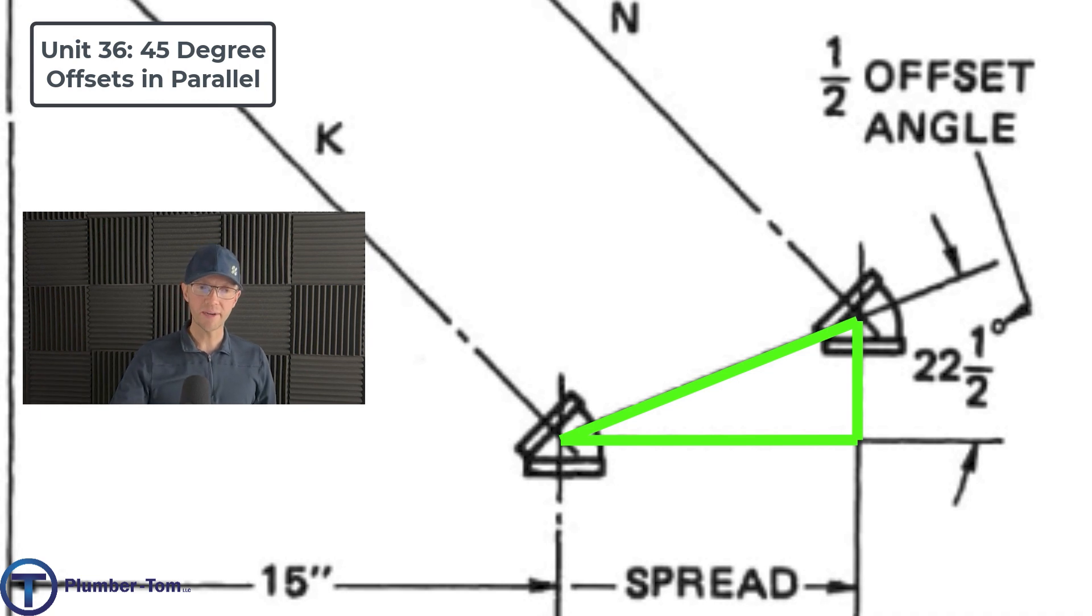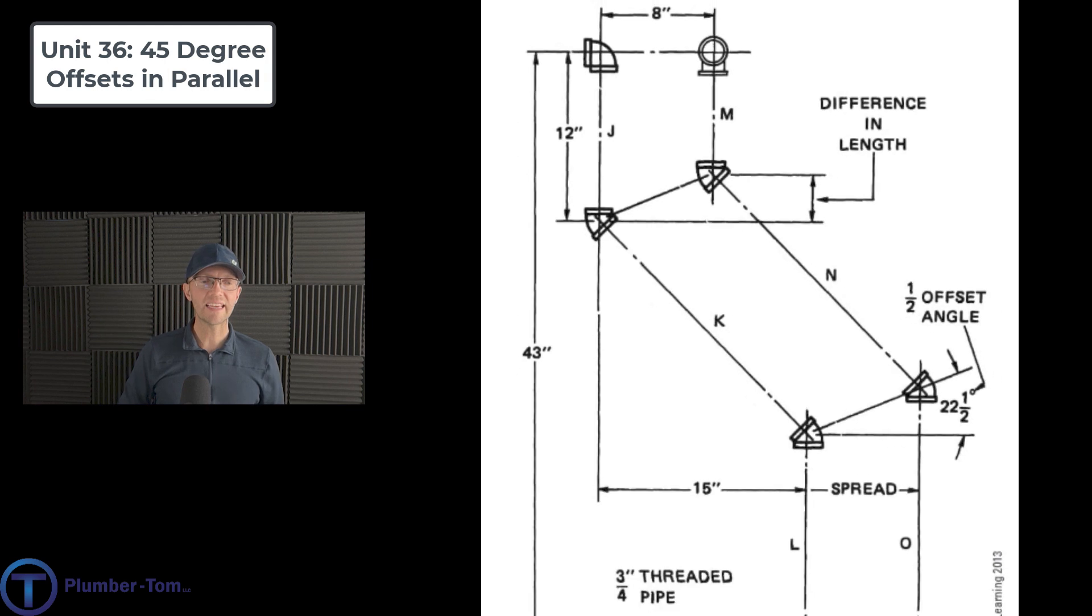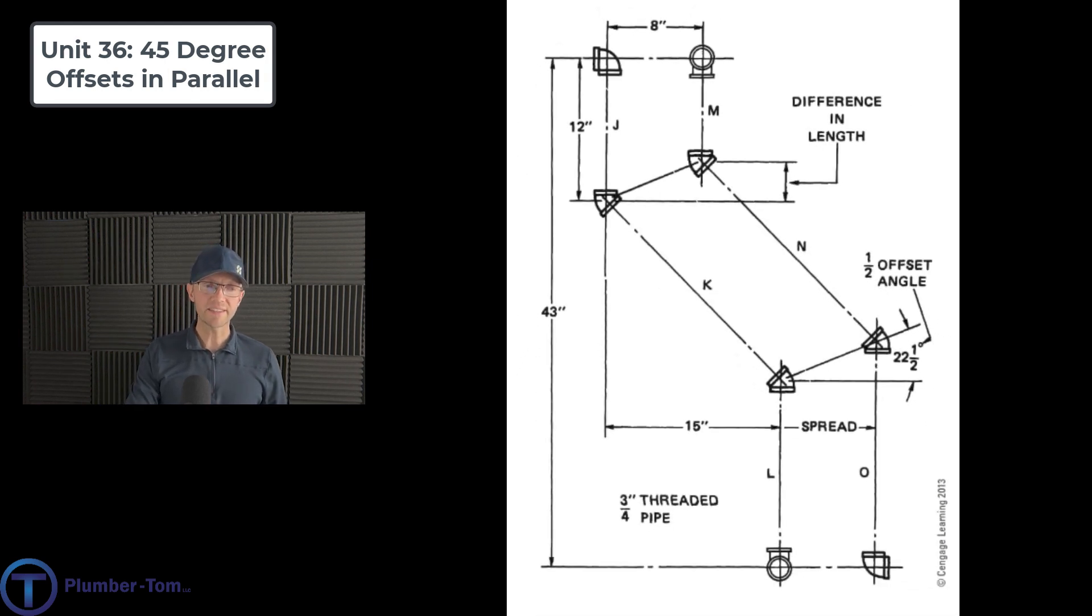You create a 22 and a half degree triangle and it's going to happen twice. We'll see it here where they point out at the bottom. It also happens up above here between J and M and that is going to be important as we're calculating the second offset M, N, and O.